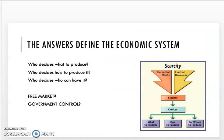Who, what, and for whom are the core issues: who decides what to produce, who decides how to do it, and who decides who can have it? Is it the free market, or is it the government making decisions? When you begin to really analyze these questions, you can begin to understand the economic system that is actually in use in a society.